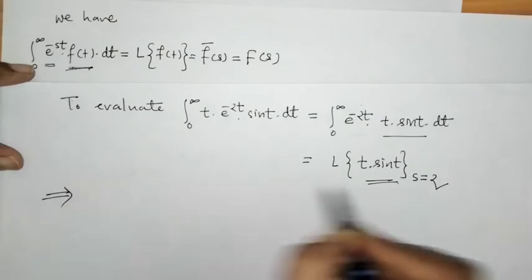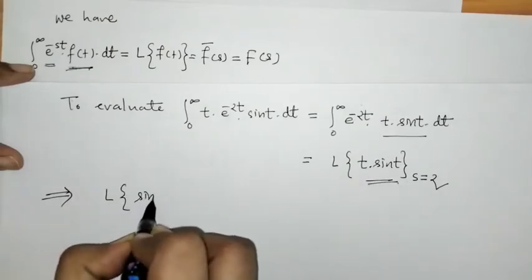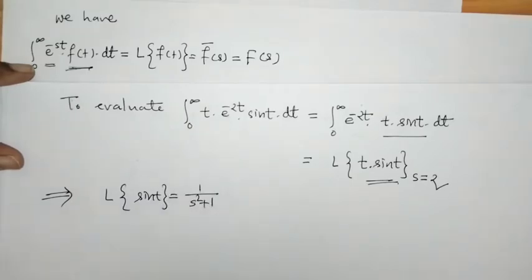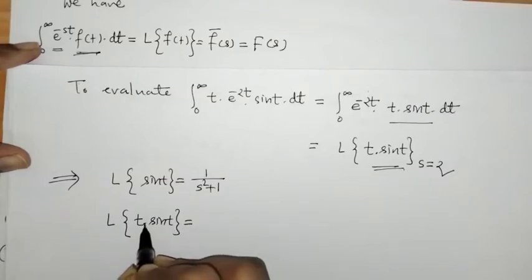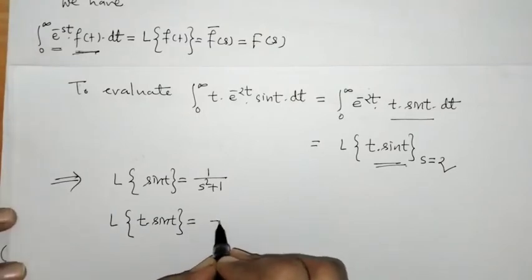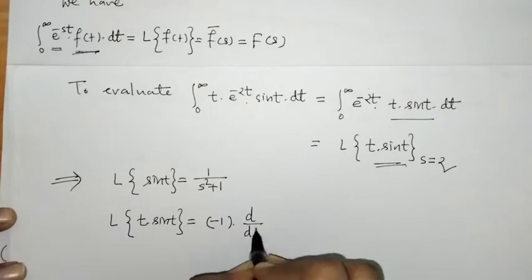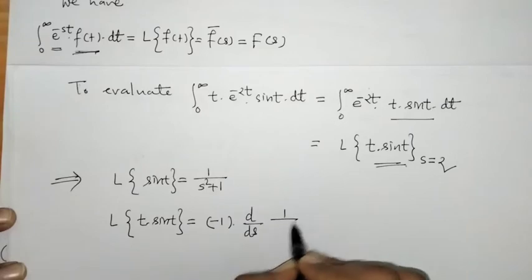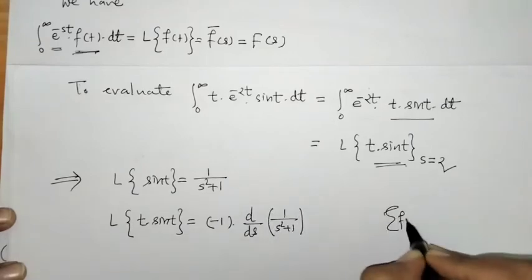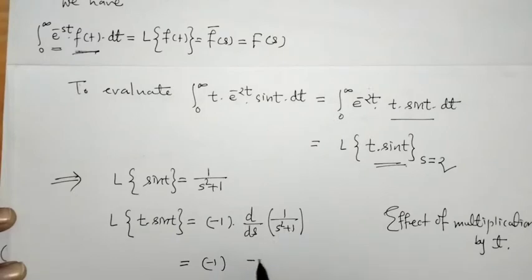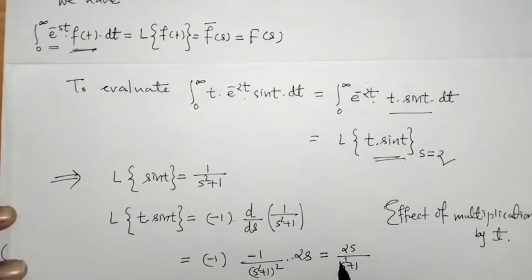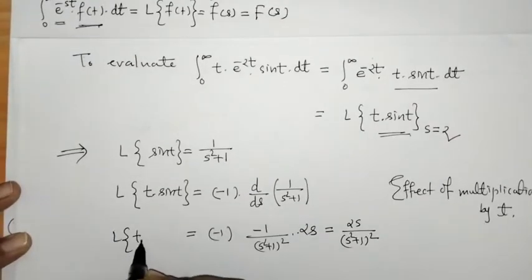We know how to find the Laplace of t sine t. First we find the Laplace of sine t, which is 1 upon s squared plus 1. Then for the Laplace of t sine t, this is the effect of multiplication by t. The effect is that we take the differentiation of this Laplace multiplied by minus 1. Differentiating 1 upon s squared plus 1 gives minus 1 upon (s squared plus 1) squared, times the derivative of s squared which is 2s. So here we have 2s upon (s squared plus 1) squared. This is the Laplace of t sine t.